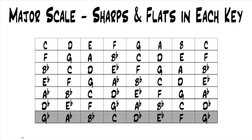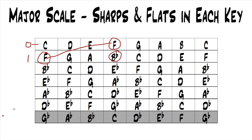We can do the same thing with the flat keys, just using a different formula. Again, we start with C because there are no flats. But this time, instead of going up to the fifth, we go up to the fourth, which is F. F becomes our new key with one flat. And instead of adding the flat on the last note, we add it on the fourth note — so it becomes B flat. So we start with the fourth note of the key we're on to start our new key, and then put the flat on the fourth note.